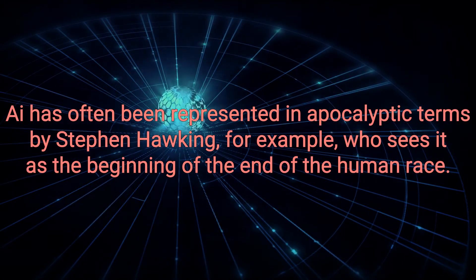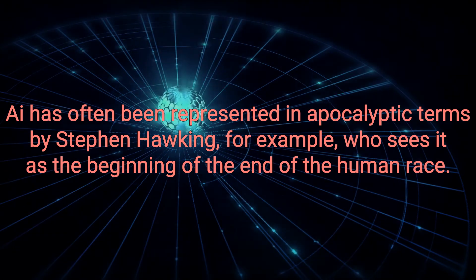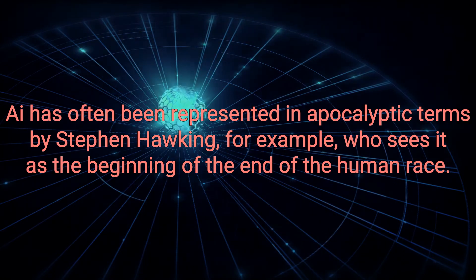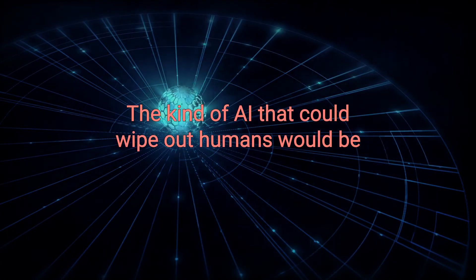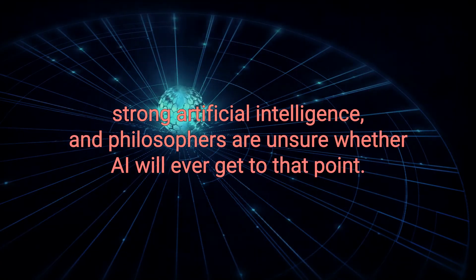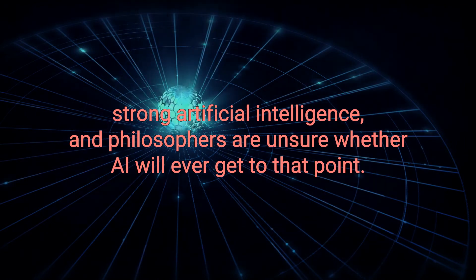AI has often been represented in apocalyptic terms, by Stephen Hawking, for example, who sees it as the beginning of the end of the human race. The kind of AI that could wipe out humans would be strong artificial intelligence, and philosophers are unsure whether AI will ever get to that point.